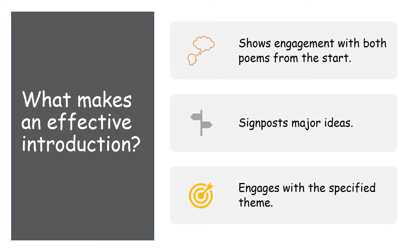For me there are three main things that make an effective introduction for this type of essay. The first one is I need to see a student who shows engagement with both poems from the very start. This is not the type of essay where you deal with one poem first and then wait until halfway through to introduce the second poem. From the very start of your introduction you need to show engagement with both poems.